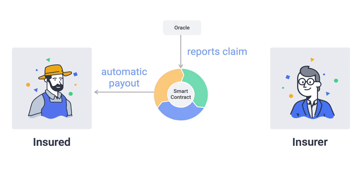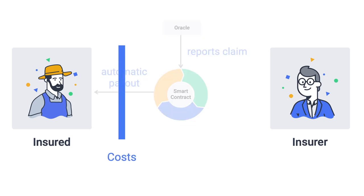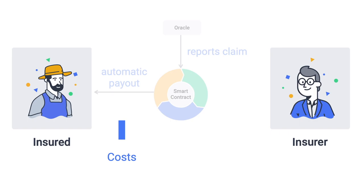Claims handling, one of the most complex and costly parts of the operation of an insurance business, is reduced to a simple and fully automated process. This eliminates a lot of effort and costs for the insurance provider, and policies can be issued more cheaply. Manual intervention in the settlement process can be completely eliminated. This is also called parametric insurance because the whole insurance process is driven by parameters or data.